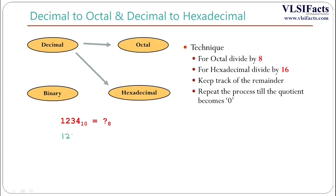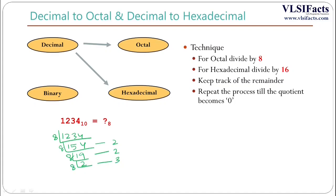Dividing 1234 by 8: the quotient is 154 and the remainder is 2. Then 154 divided by 8 gives quotient 19, remainder 2. Then 19 divided by 8 gives quotient 2, remainder 3. Finally, 2 divided by 8 gives quotient 0, remainder 2.